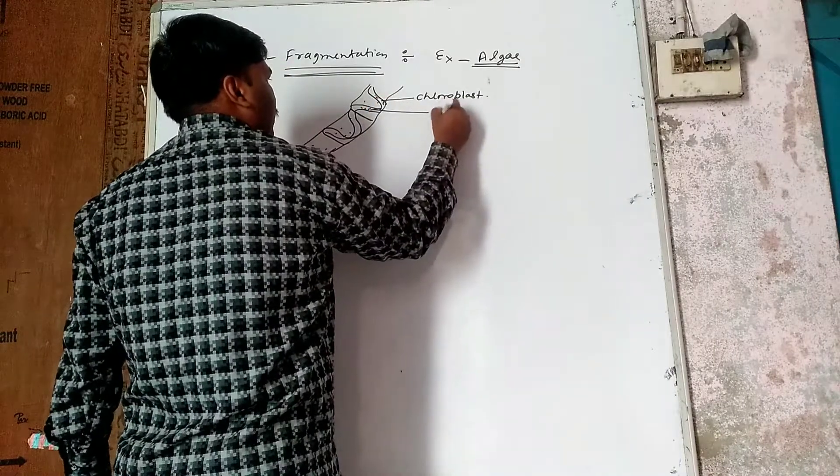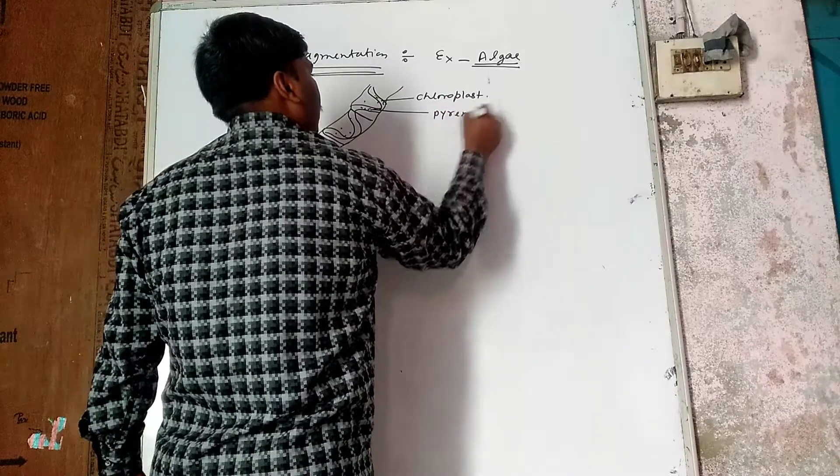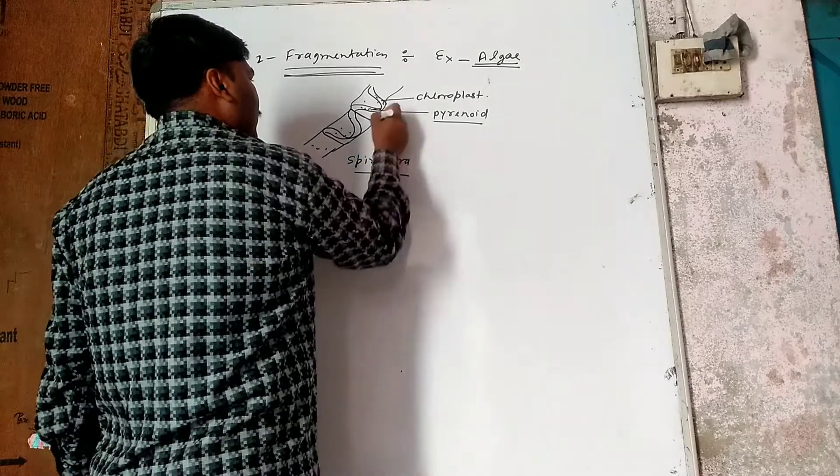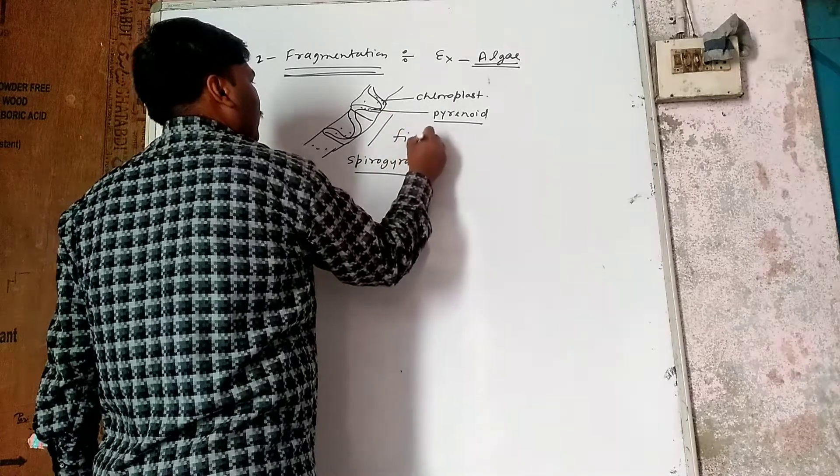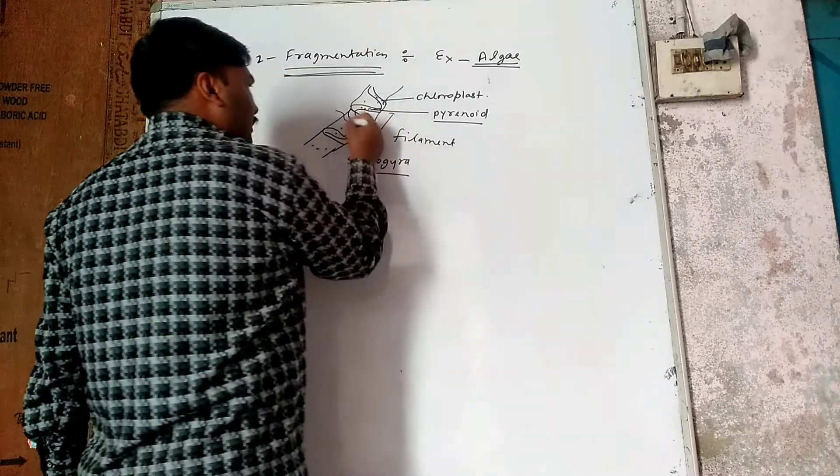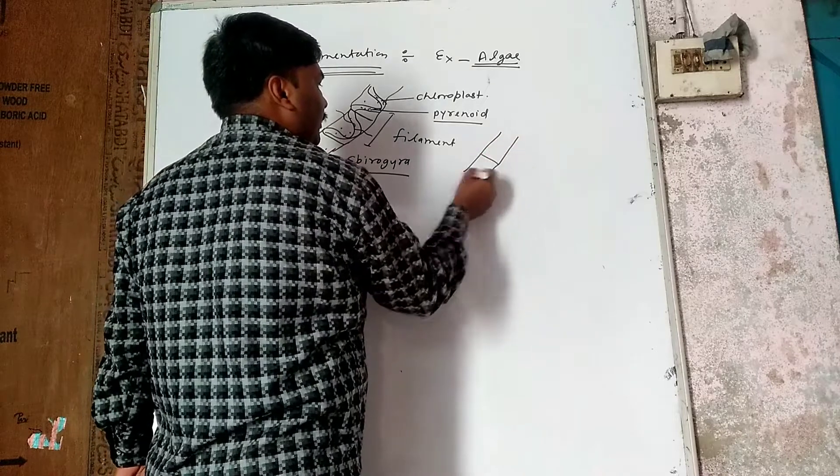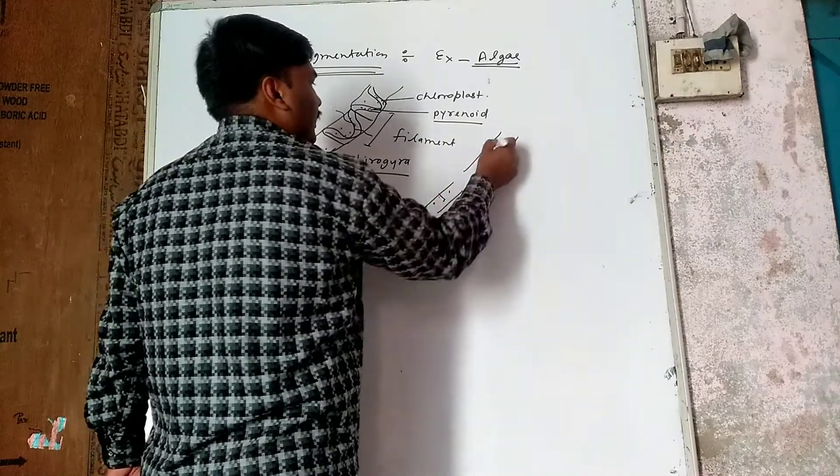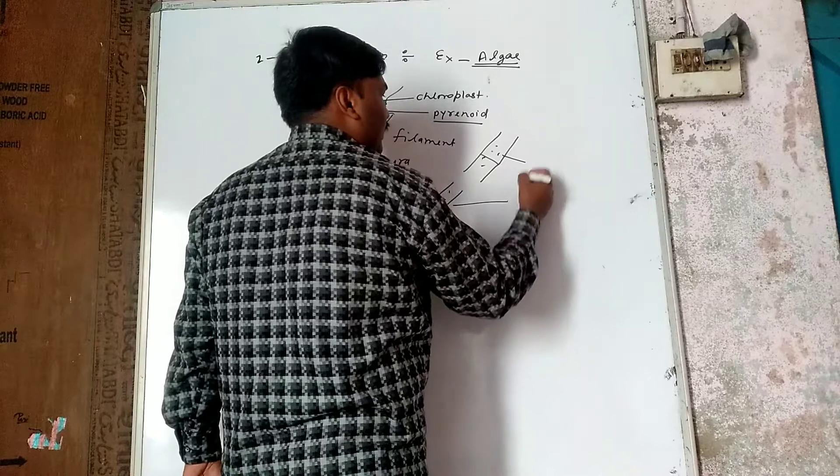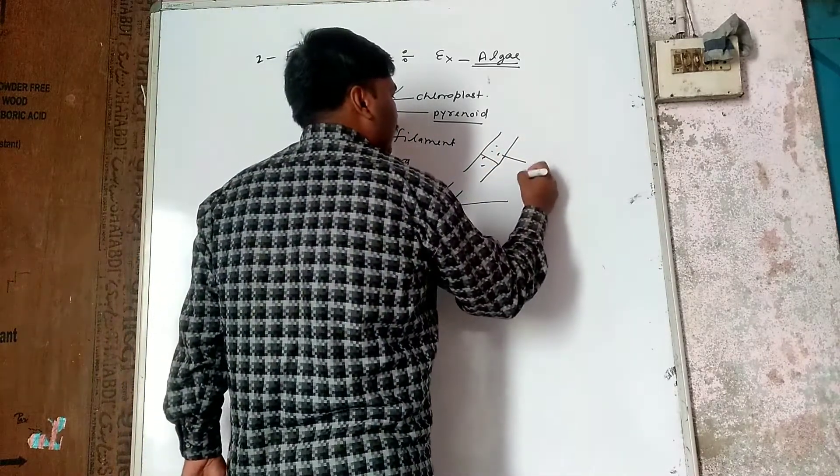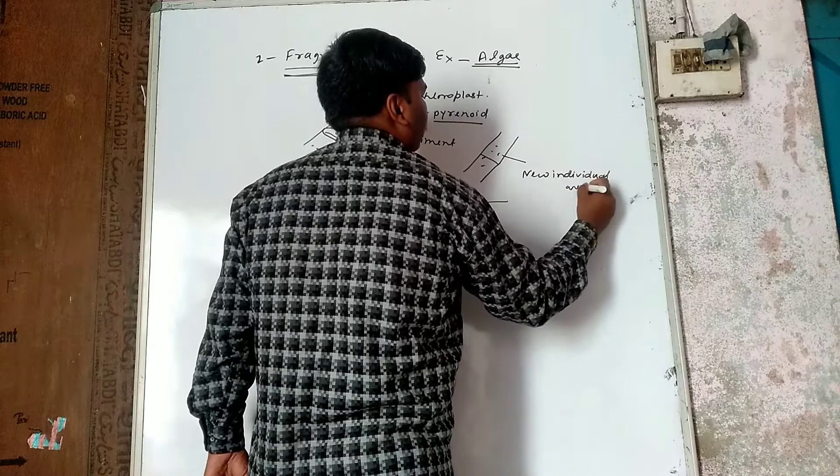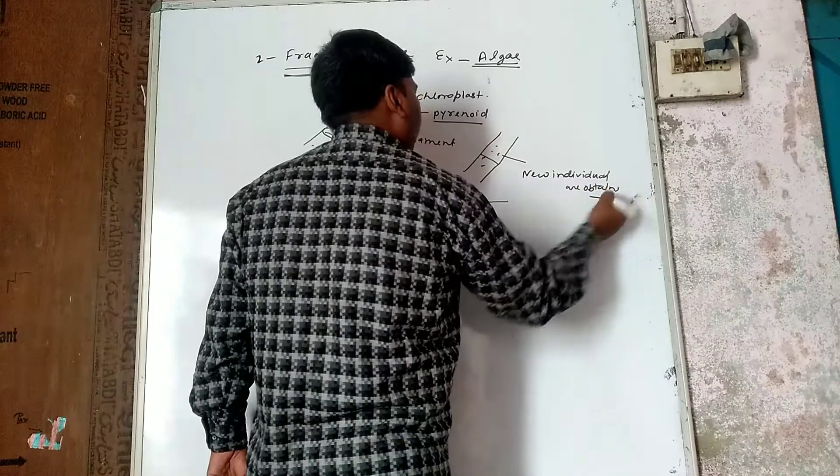What happens is the filament - this filament is in a type of condition which breaks. What happens when it breaks? When we break, separate fragments form new daughter organisms, which means new individuals are formed. This means new individual offspring.